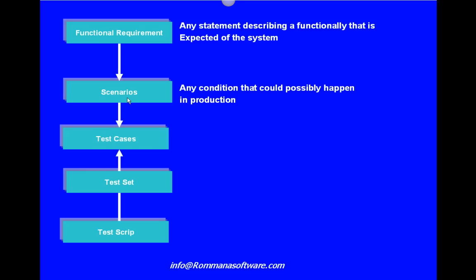It must always be the goal of the test process and the whole project team to come up with as many scenarios as possible. Scenarios should be stated in a very simple way. Then you move to test cases — test cases are the means by which we are going to test the scenarios. Again, there is a one-to-many relationship between scenarios and test cases, meaning that for each scenario we will have a number of test cases. Each test case consists of a set of inputs, a set of preconditions — which are all conditions that exist before the test case is run — and together these produce a set of post conditions and outputs.